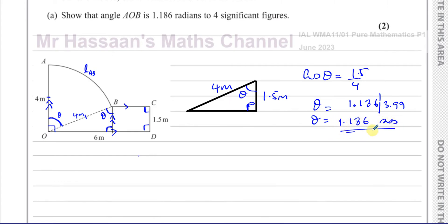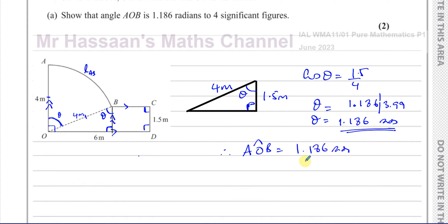So angle AOB is 1.186 radians — that's part A completed.